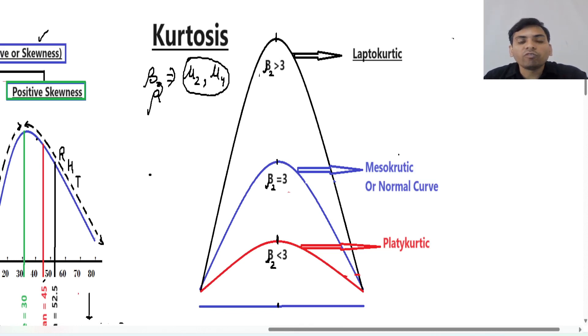If the value of beta 2 is greater than 3, then we can say this data type is leptokurtic. If this value of beta 2 equals to 3, then we can say this is mesokurtic or normal type curve.